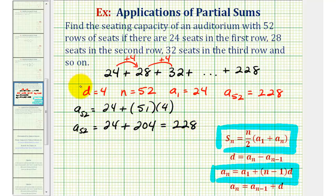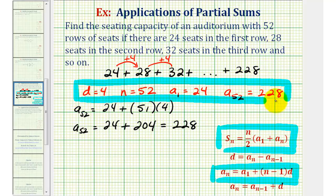And now using this information, we have all the information we need to find the number of auditorium seats or the sum of this arithmetic series.